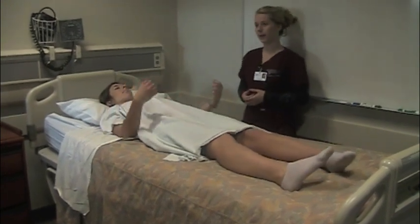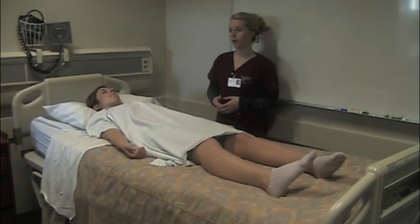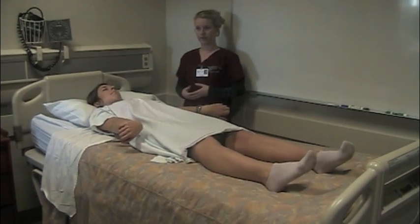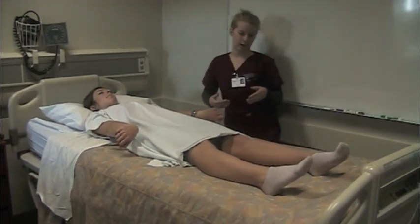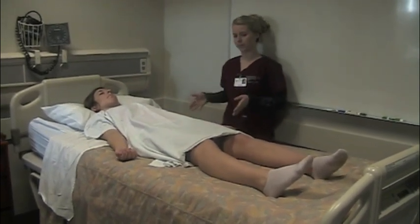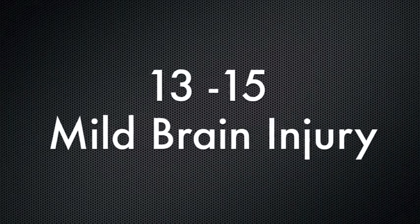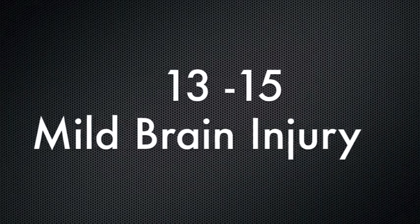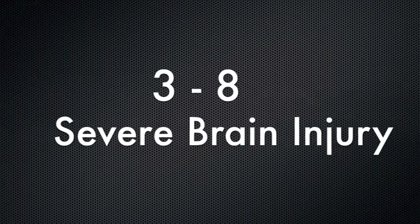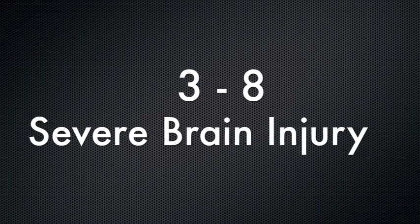A patient receives a 2 if they display abnormal extensor response or decerebrate posturing — arm adduction and extension with wrists pronated and fingers flexed, legs extended and plantar flexed. A flaccid or unresponsive patient receives a 1. A total score of 13 to 15 indicates mild brain injury, 9 to 12 moderate, and 3 to 8 severe. The lowest possible score is a 3, not a 0.